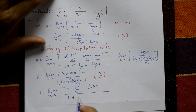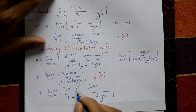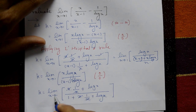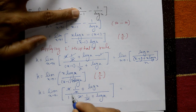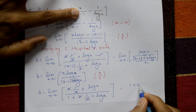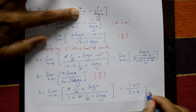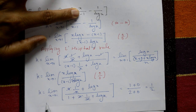Differentiating again using product rule on x·log x·log x in the numerator, and differentiating the denominator. After applying the product rule: x·(1/x) + log x gives 1 + log x; terms simplify. Taking x = 1: numerator gives 1·log 1 = 0, denominator gives 1 + 1 = 2, plus log 1 = 0. Therefore k = 1/2.